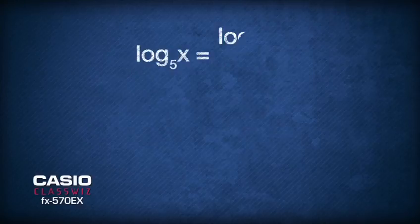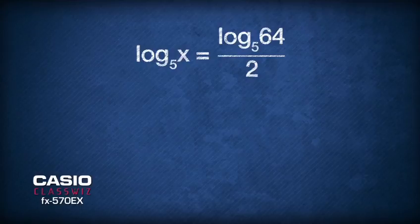Now, we multiply 2 to both sides of the equation, getting 2 times logarithm base 5 of x equals logarithm base 5 of 64.